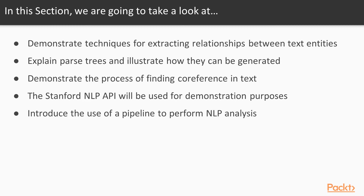We'll also demonstrate the process of finding a co-reference in text. This can be important in many applications. A co-reference, for example, may be found in a sentence such as: 'Daniel went to town and he saw the zoo,' where Daniel and he are co-references. Being able to identify those can add more meaning and better understanding of the actual text involved.